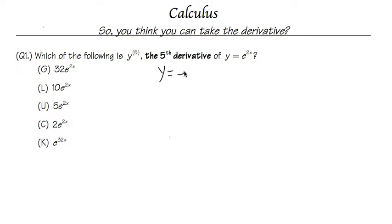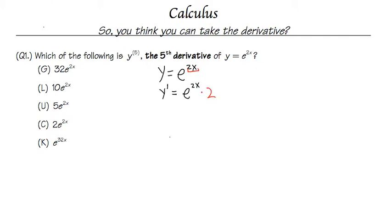Let me write down the original equation: e^(2x). For the first derivative, using prime notation, the derivative of e^(2x) is just e^(2x) — it pretty much just repeats itself. However, we have to multiply by the derivative of the inside function, which is 2x, and the derivative of 2x is just 2. So we get 2e^(2x).